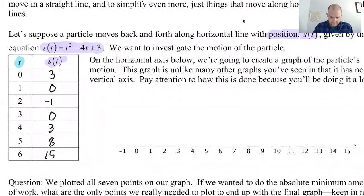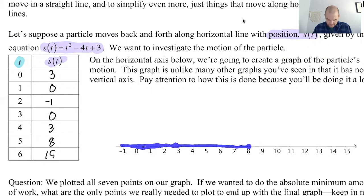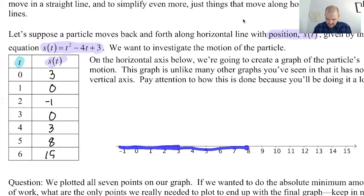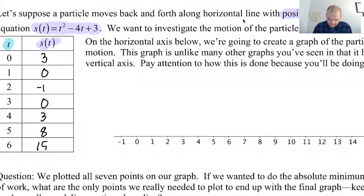So at t = 0 I'm at position 3, at t = 1 I'm at 0, at t = 2 I'm at −1, then I go back to 0, back to 3, then to 8, then to 15. So the particle basically goes this way, and then comes back this way. You can watch it move — but it's really hard to get a sense of that if you just graph it as a horizontal line.